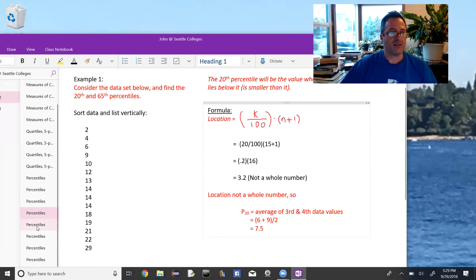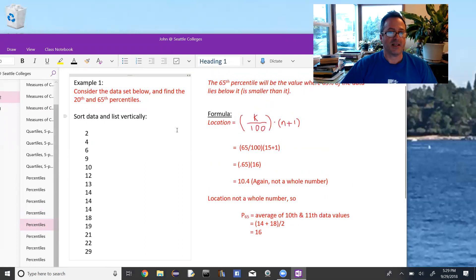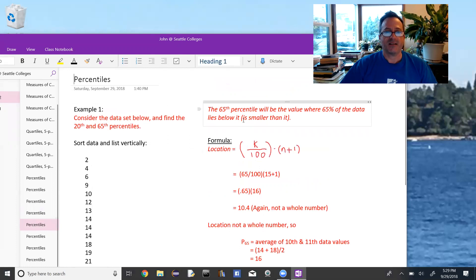And then part two, looking for the 65th percentile. The 65th percentile will be the value where 65% of the data lies below it or is smaller than it. And again, it's the same formula. The location is given by k over 100 times n plus 1. And now again, k is 65 and n is 15. So 0.65 times 16 is 10.4.